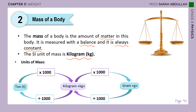The SI unit of mass is kilograms, but we have other units like the ton and the gram. To convert from ton to kilogram, multiply by 1000. To convert from kilograms to grams, multiply by 1000. The other way, divide by 1000. It's really good that we know this conversion table.